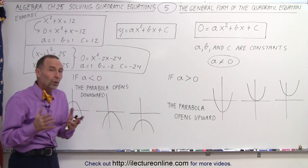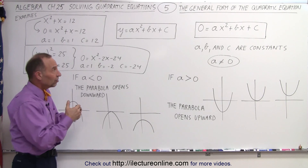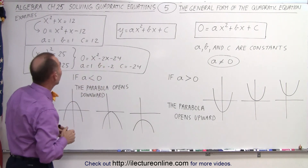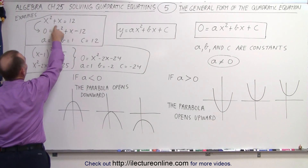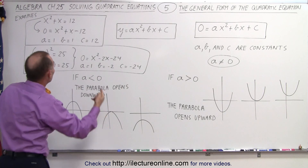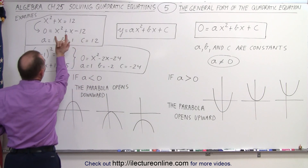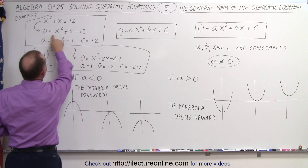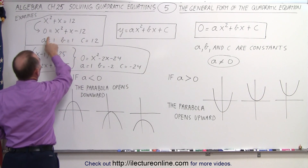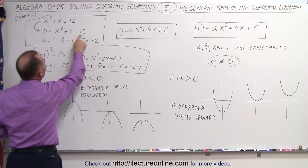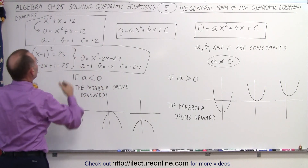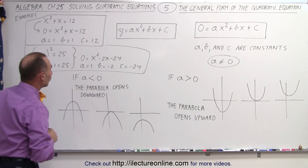Notice that the equation you might look at may not necessarily immediately look like it belongs in the general format. For example, x squared plus x equals 12 doesn't appear to be in the general format. But when you move the 12 across and switch the equation around, it looks like this. In this case, a is equal to 1, b is equal to 1, and c is equal to negative 12. So it is a legitimate quadratic equation in the general format.